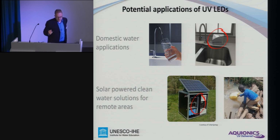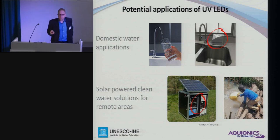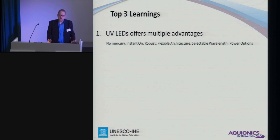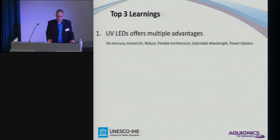The main three takeaways: we have some advantage due to the lamp technology — no mercury, instant on-off, very robust, flexible architecture, and selectable wavelengths. I should mention that in our disinfection unit we are using 275 nanometer LEDs, which are also in the germicidal range and basically as effective as 254. With 263 being kind of in the middle, I think that can be appreciated.